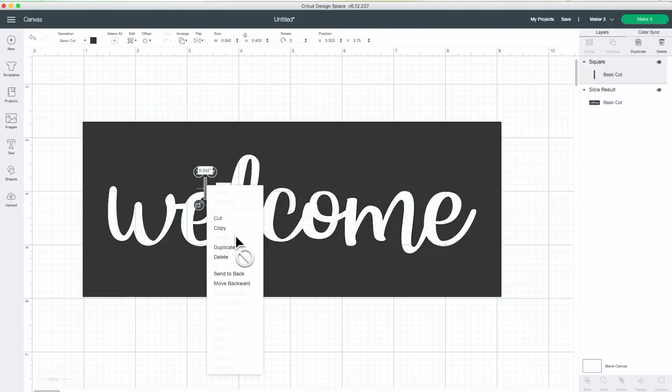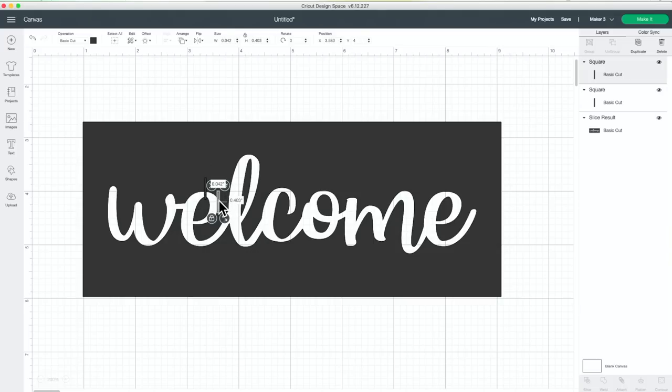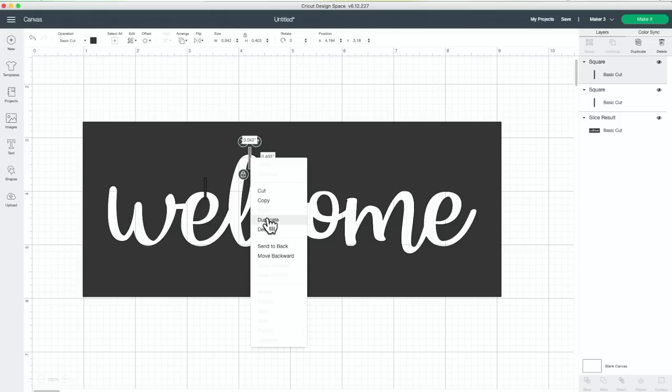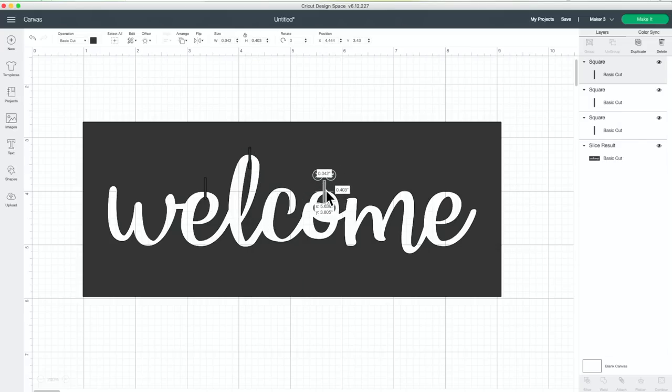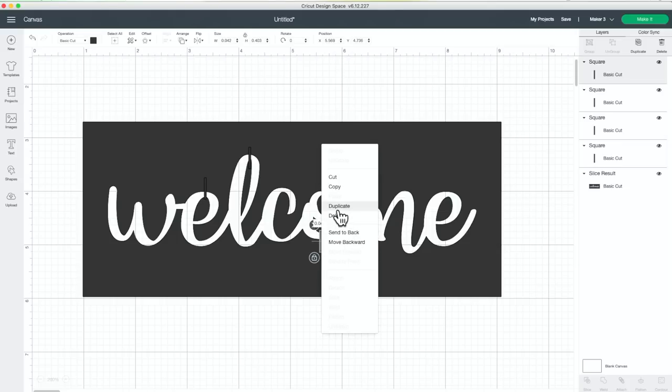And then I'm going to duplicate this and place one on each letter just like this. You can duplicate again to do this part of the O. Duplicate. And to duplicate, I'm just right clicking and pressing duplicate. You can also duplicate layers over here.